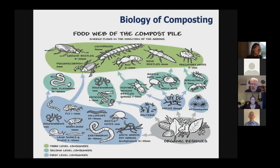We might start with the bacteria — they easily consume some of the materials — and then later other organisms come in and help finish the composting off. So if you see these critters in your compost pile, they're there for a reason. They are helping to break material down and turn it into a lovely compost product.